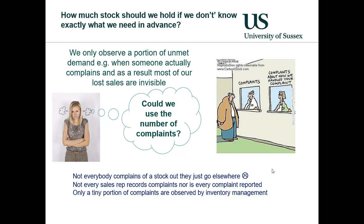One of the reasons for this is we only observe a portion of unmet demand — that is, perhaps when somebody actually complains when they come into our store and find that the item they wanted to purchase is not available. Sometimes they do complain, sometimes they request that the item be delivered later and we put them in back order. But not everybody complains. What is more usual, and we all know this from our own behaviour, is that if we go into a particular store or online and the item is not available, we simply go immediately elsewhere.